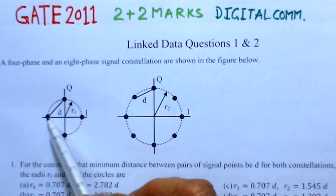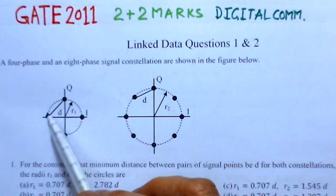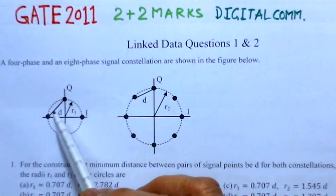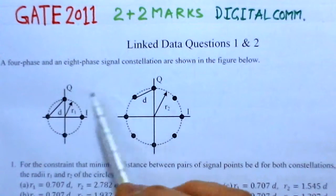One thing which is common to both is that distance d - the minimum distance between pairs of signal points - is d and that is the same for both these constellations.